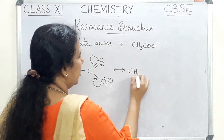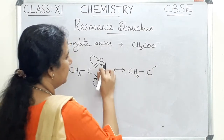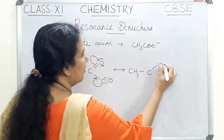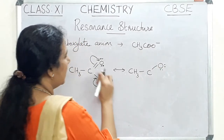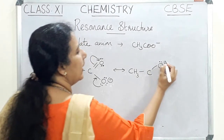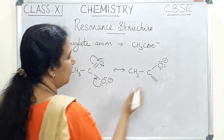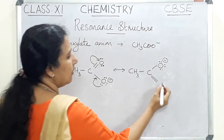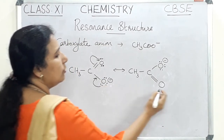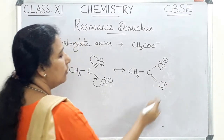We can draw the next structure C, where it is a single bond and oxygen has two lone pairs. It already has two lone pairs, and one more pair of electrons is added, so it acquires a negative charge. Then, on the other side, there is a double bond and one pair is shifted towards here, leaving two lone pairs. So oxygen is having two lone pairs in this second structure.